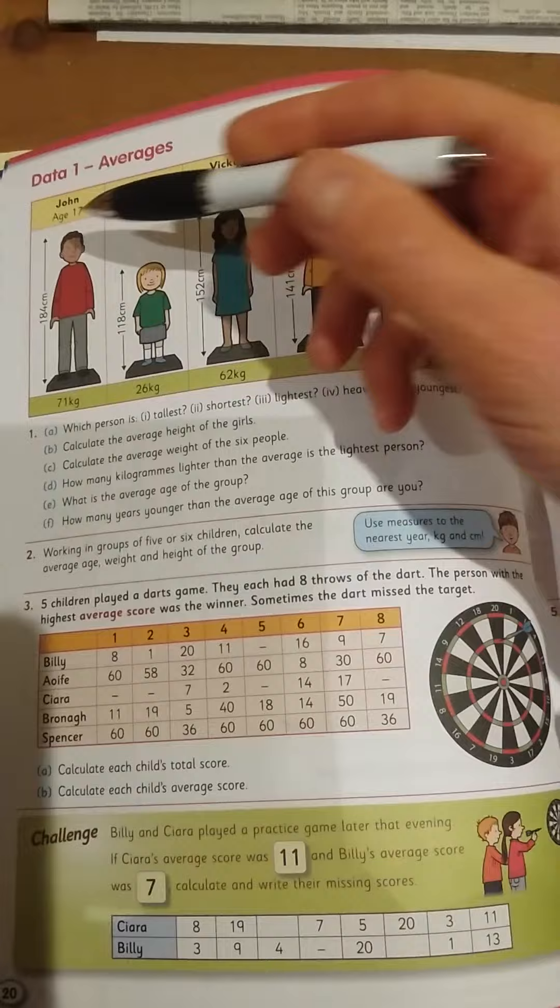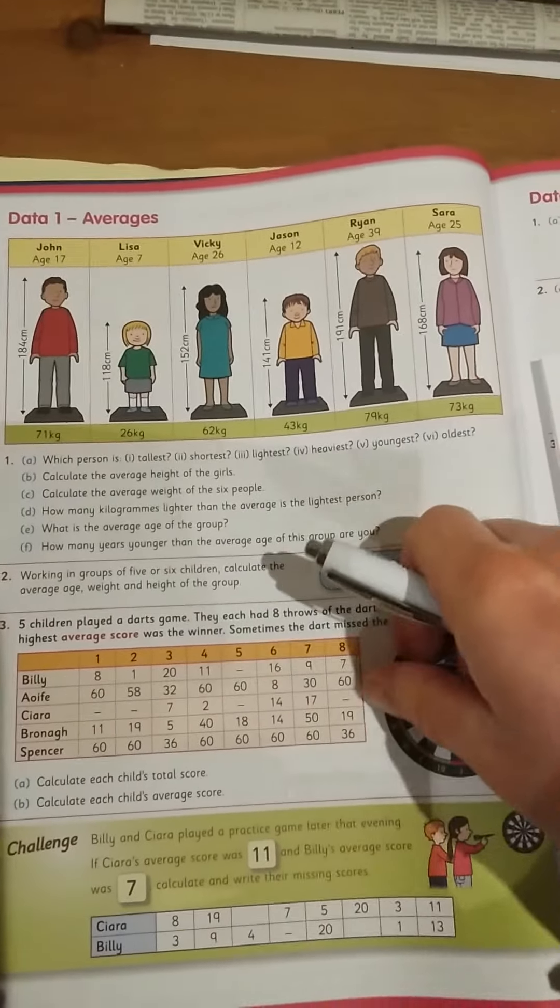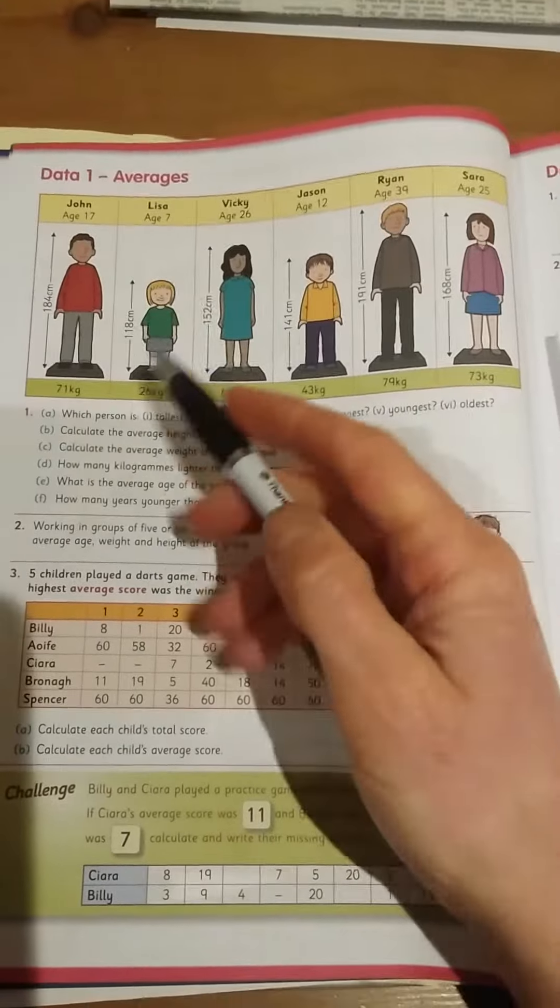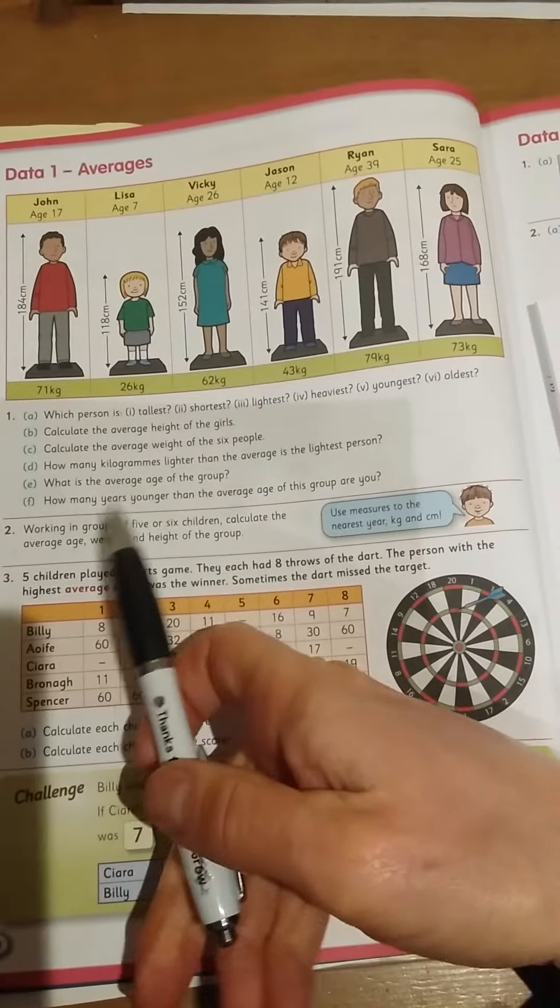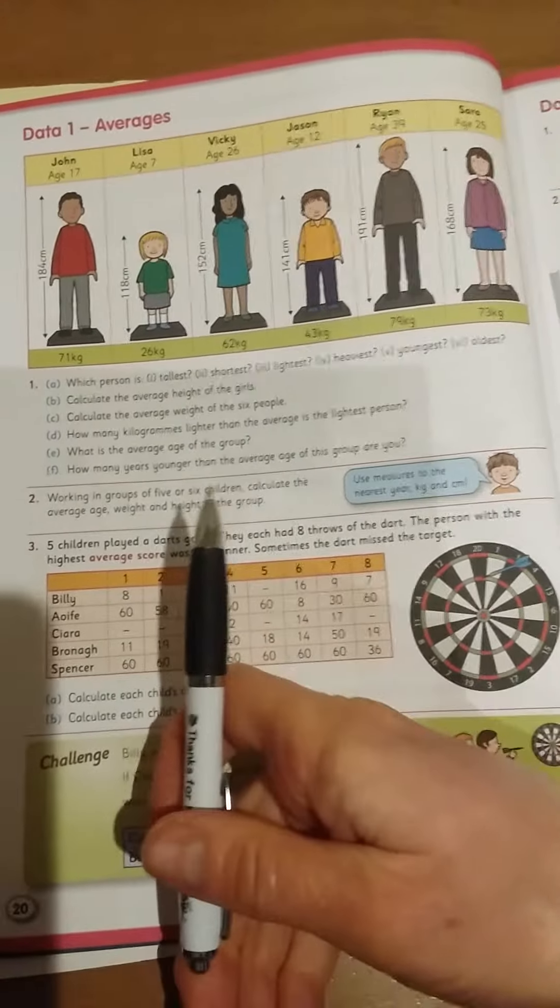What's the average age of the group? Again, you add up their ages and divide by the amount of numbers you add up. How many years younger than the average age of this group are you? Well, you have to answer that yourself.